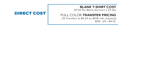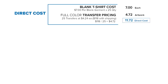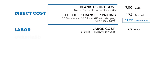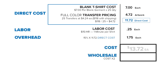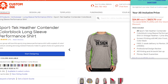In this last example, we're taking a full-color design and putting it on performance wear with a quantity of 25 shirts. In the cost-based pricing strategy, we take our direct labor cost, material costs, and overhead, and your total cost for this shirt comes to $13.72. If you're selling this to a team, you can sell this for $27.44 and you're going to profit $343.00. When we check competitors' prices like on Custom Ink's price check, they're selling this same shirt for $24.95.